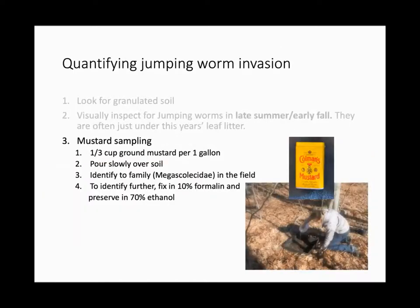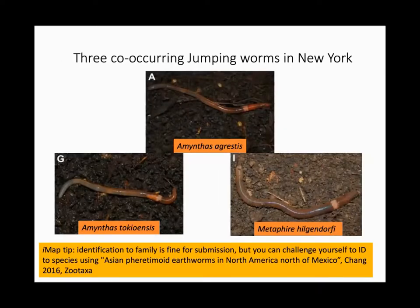If you're feeling keen, use a hand lens to look at the setae — small hair-like appendages on the worm segments. European species have about four to ten setae per segment, often in pairs. Jumping worms have bristle-like setae that are harder to see. For a quantitative approach, use mustard sampling: mix one third of a cup of ground mustard per one gallon of water, pour on soil, count worms, and fix in ethanol for species-level ID.